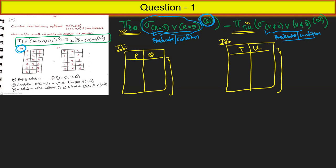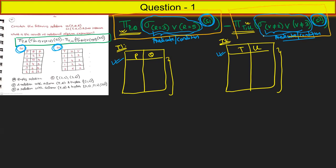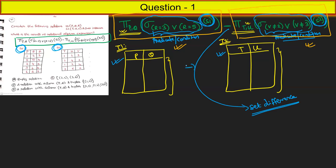Who will satisfy this condition? If both results apply to table 2, then we apply the set difference operation. The set difference operation takes the two results — T1 and T2 — and you perform the set difference and then we will talk about it.